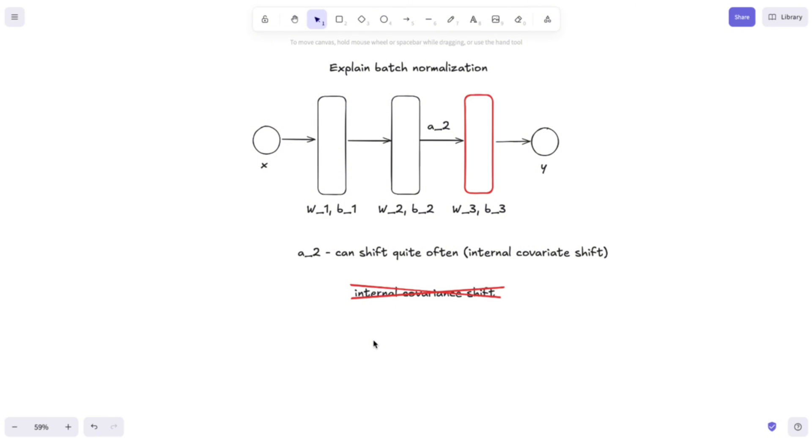Now coming back, how does Batch Normalization solve this problem? It does it in two steps. The first step is to normalize the input of the layer by extracting the mean of that batch and dividing by the standard deviation of that batch.